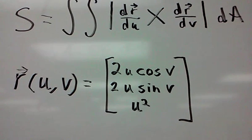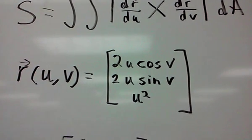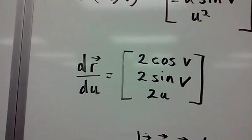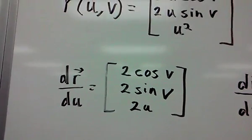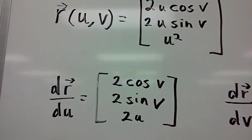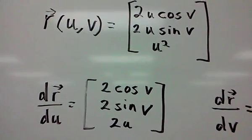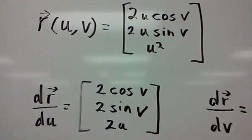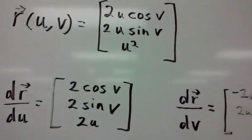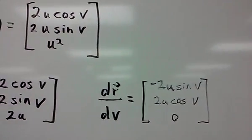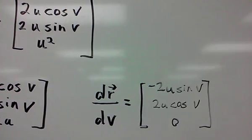So first thing we'll do is find the derivatives of these with u and v. The derivative with respect to u is fairly easy. 2u becomes 2, u squared becomes 2u. The cosine and sine function, which depend on v, are left unchanged. You have to use the trigonometric rules for the dr/dv, though.